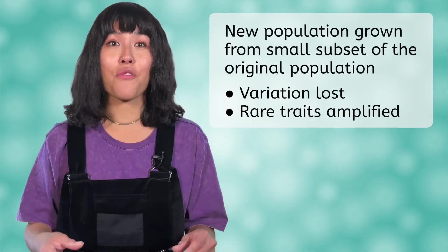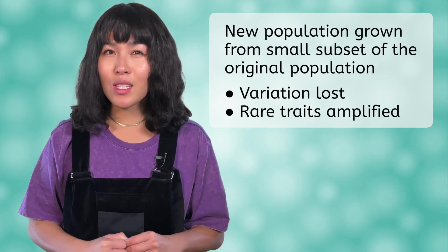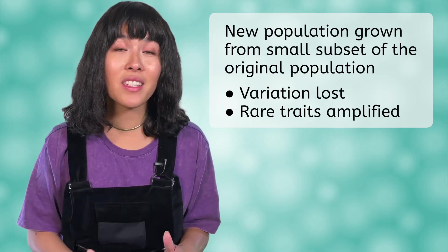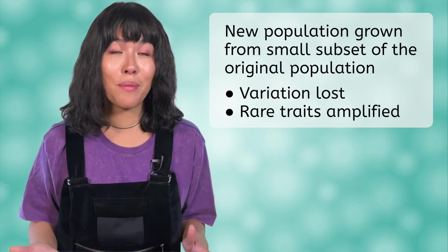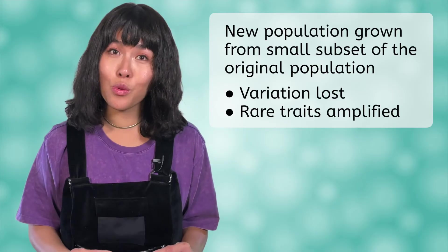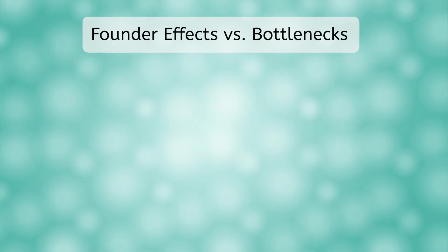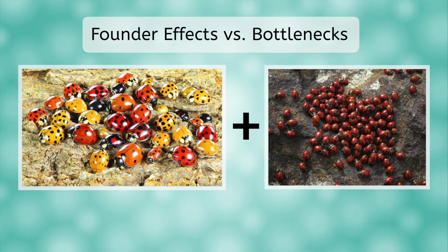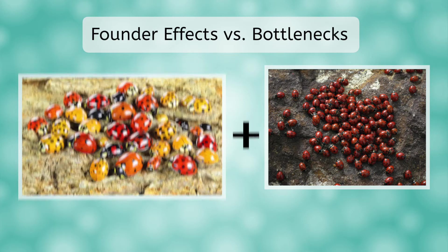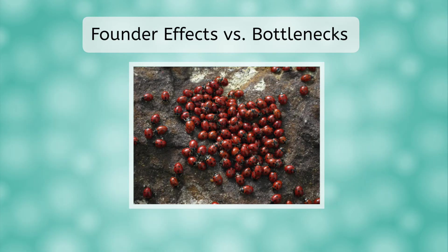Bottlenecks and founder effects may arise from different circumstances, but they both have the same outcome: a new population is grown from a small subset of the original population. This will almost always result in variation being lost and may cause otherwise rare traits to be amplified in the new population if they happen to be present in the individuals who started the population. The biggest difference between a founder effect and a bottleneck is that in a founder effect, the original population lives on in their original location, in addition to the new population that was begun in a different location. Had our ladybugs been involved in a bottleneck instead, the original population would simply have been gone — perhaps wiped out by a fire, flood, or even disease.